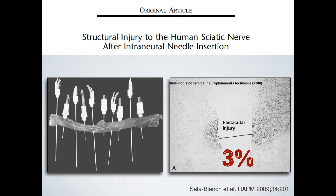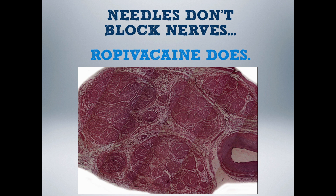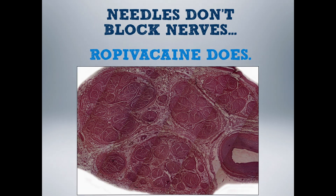We do tend to think of fascicles as floating within the loose areolar epineurium, and maybe a blunt block needle would push them aside rather than penetrate them. This is not always the case, as we see in this elegant study of fresh human sciatic nerve. I don't like the idea of saying to a patient: 'I'm going to put this needle inside your nerve and it's going to cut 3% of your delicate nerve fibers, but the surgeon can make incision two minutes faster.' Remember: needles don't block nerves — local anesthetic does.